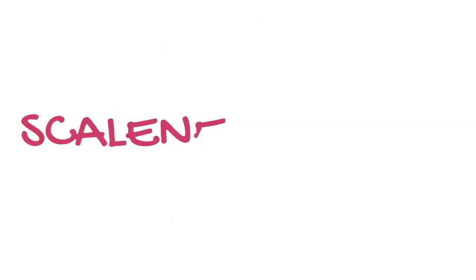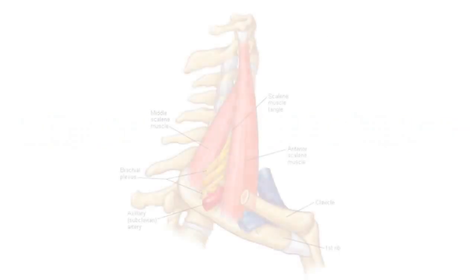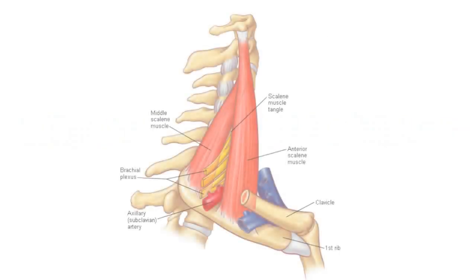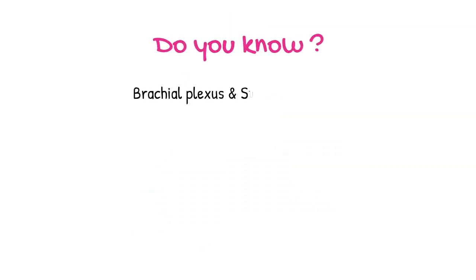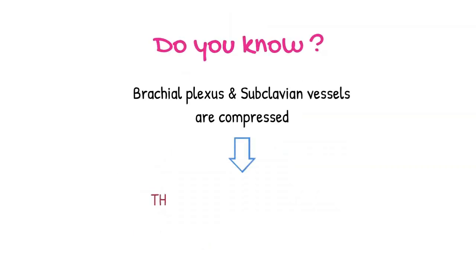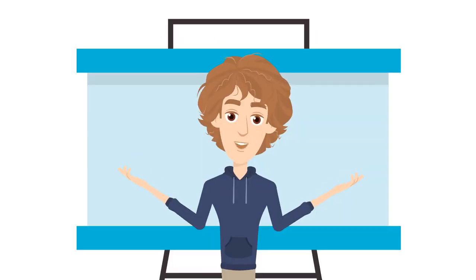Coming on to the neck: the inferior boundary of the scalene triangle is the first rib, posterior by scalenus medius, and anterior by scalenus anterior. The special feature is that the brachial plexus and subclavian vessels are compressed here, causing thoracic outlet syndrome.